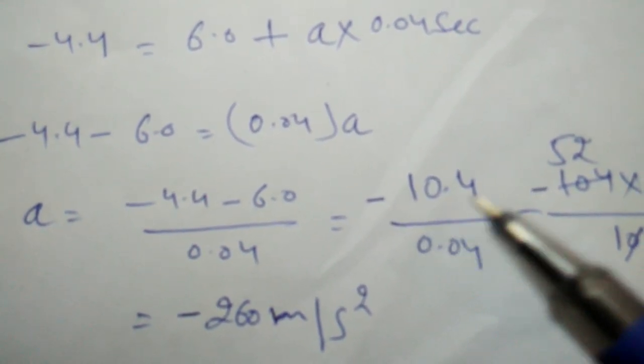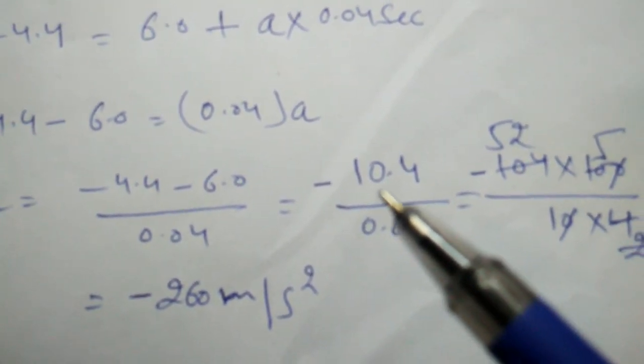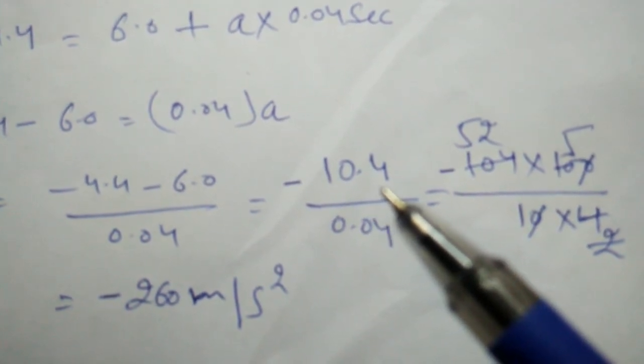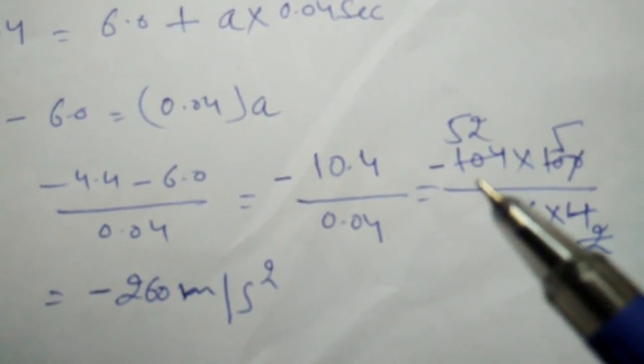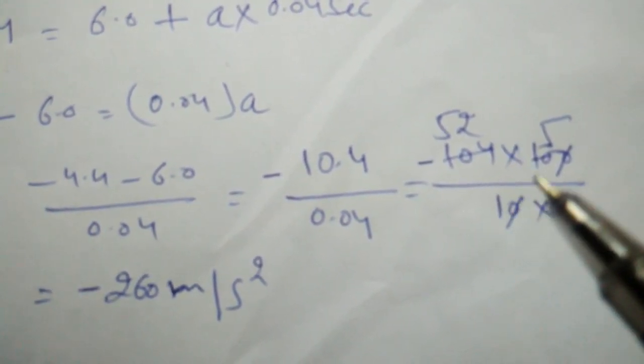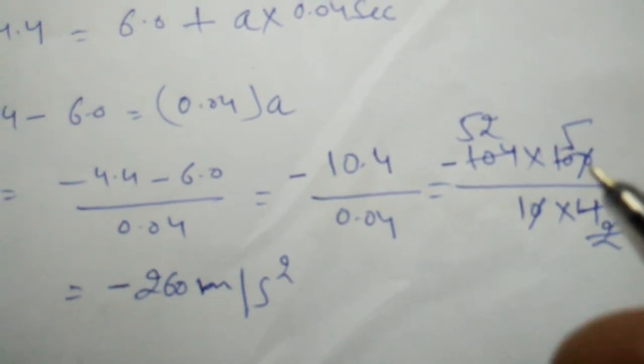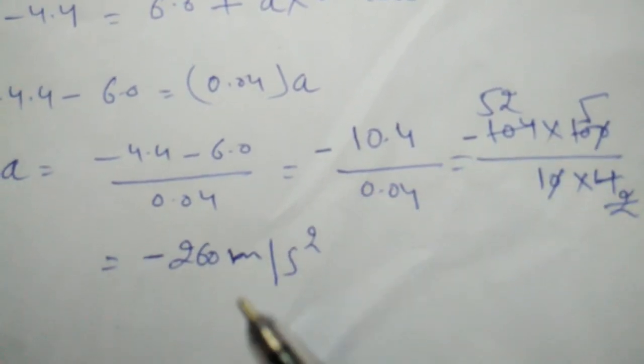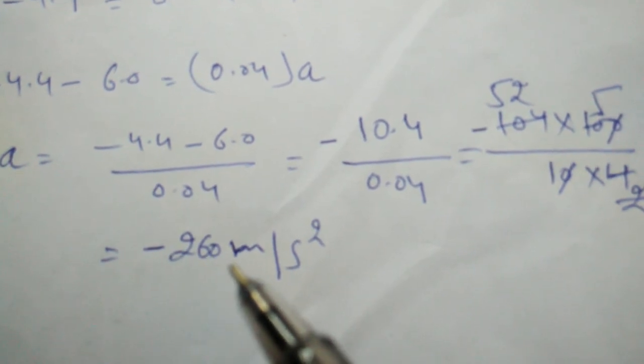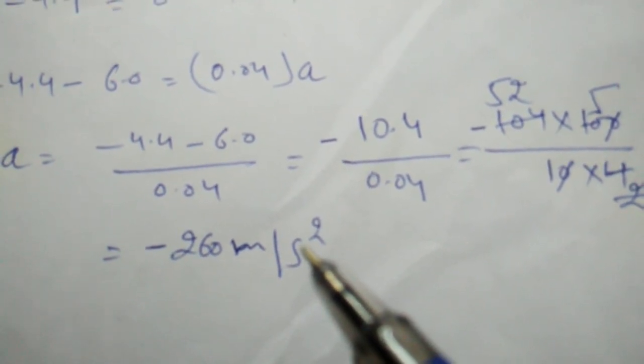It will be 10.4 upon 0.04, and removing the decimal from this equation, 10.4 upon 0.04 equals 1040 upon 4. After making all the calculations, it will be minus 260 meters per second squared.